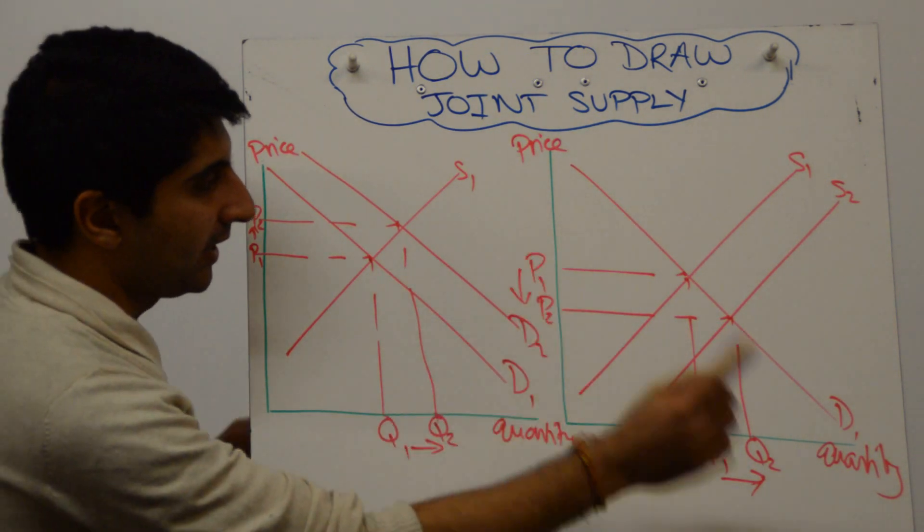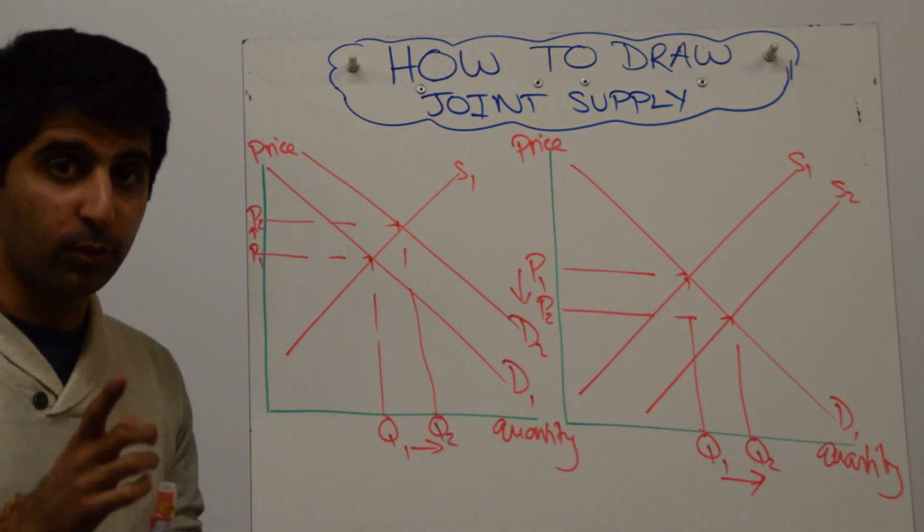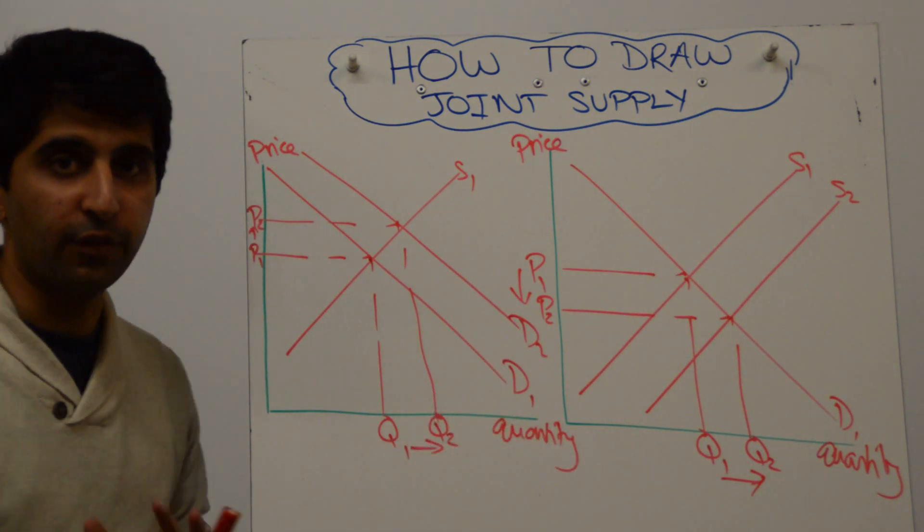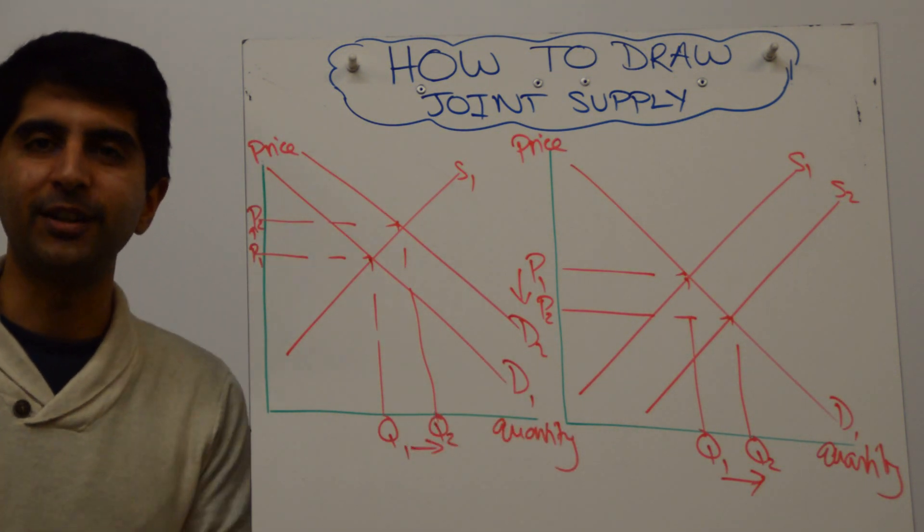Have we labeled our axis? Always check. Yes. Have we labeled all of our curves? Yes we have. Have we labeled all of our equilibria? Yes we have. Useful arrows to show the changes there as well. In which case we're done with this diagram.